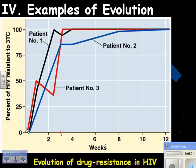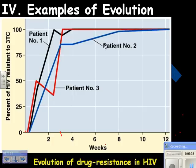That resistant virus reproduces — because that's what viruses do — and all of its offspring are resistant. In not too long, in about three weeks, you have patients whose HIV is resistant to that drug, and now you have to switch drugs.